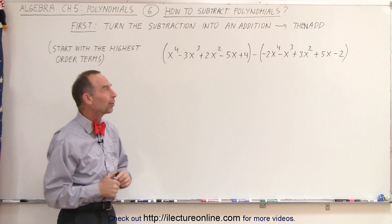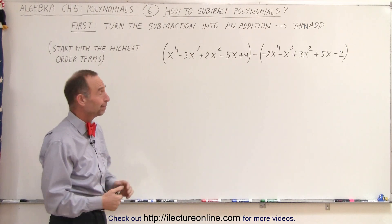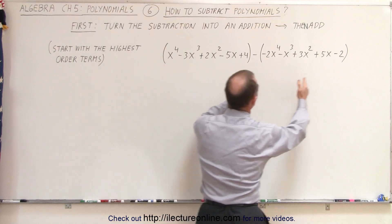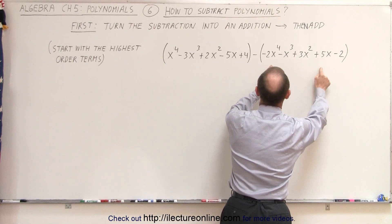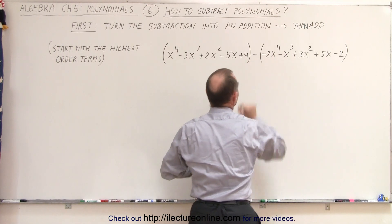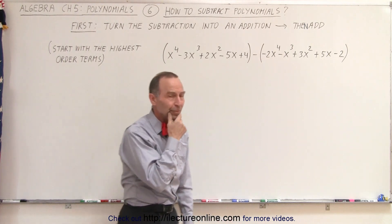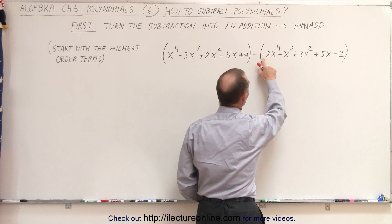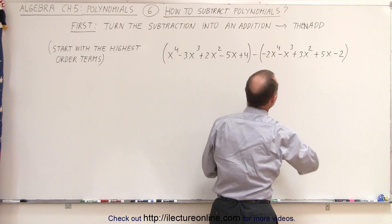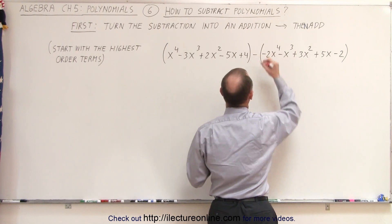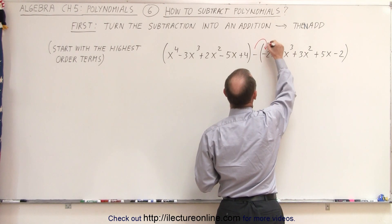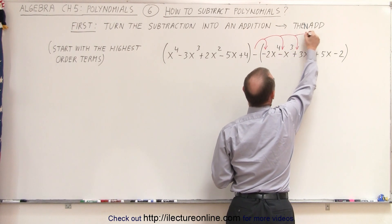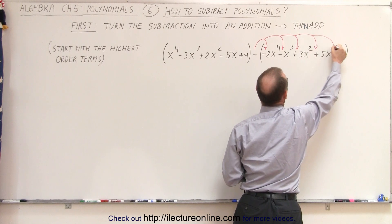That seems like a good way to go about it, but how do we do that? Well, here we have two polynomials — we have our first polynomial, we have our second polynomial, and it's subtracted from the first polynomial, indicated by this negative sign. So what we're going to do is take that negative sign and apply it to each of the terms inside the second polynomial — to this sign, to this sign, to this sign, to this sign, and to this sign.